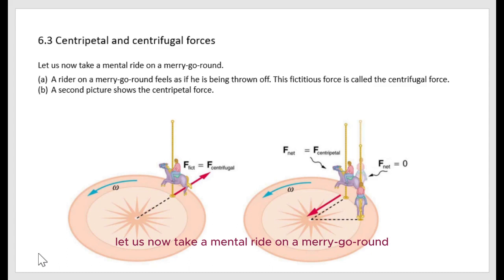Let us now take a mental ride on a merry-go-round. If you look at the two pictures at the bottom of the PowerPoint, first you can see a rider on a merry-go-round feels as if he's being thrown off. This fictitious force is called the centrifugal force. From the second picture, you can find the centripetal force and its direction.